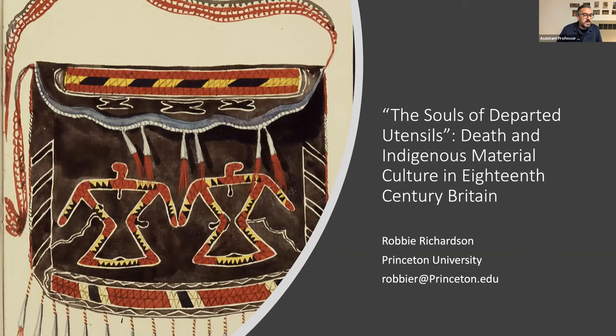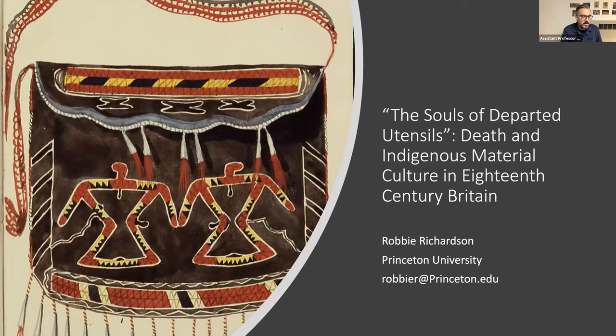In 1990, the United States passed the Native American Graves Protection and Repatriation Act, or NAGPRA. Since that time, over 50,000 individual human remains, 1.2 million associated funerary objects, 219,000 unassociated funerary objects, 5,000 sacred objects, over 8,000 objects of cultural patrimony, and 1,600 objects both sacred and patrimonial have been repatriated. This gives a sense of the scale of the collecting of Indigenous death across the world — and these numbers are in the US only, and do not include the many more objects and bodies still in collections.